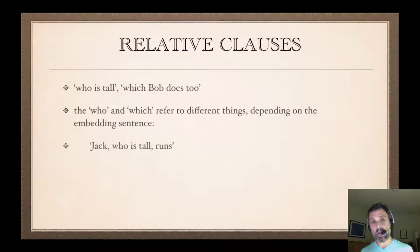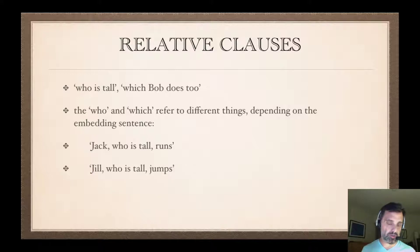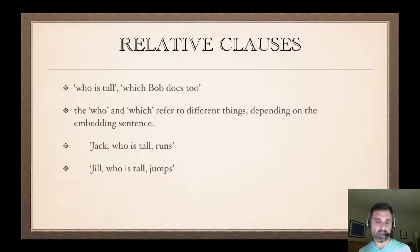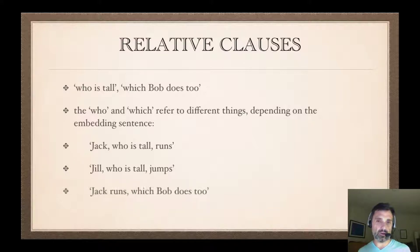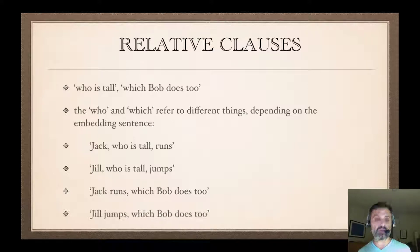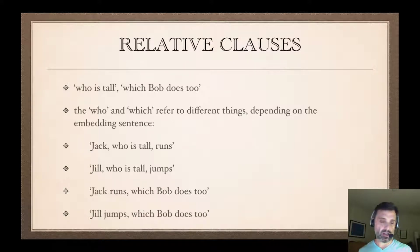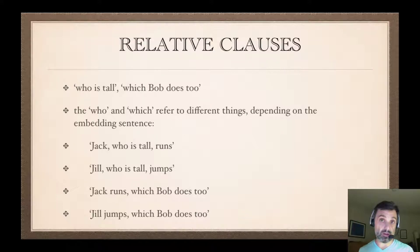For example: 'Jack, who is tall, runs' and 'Jill, who is tall, jumps.' In the first case, the 'who' refers to Jack. In the second case, the 'who' refers to Jill — so it's relative. And when we say 'Jack runs, which Bob does too' or 'Jill jumps, which Bob does too,' the 'who' or 'which' gets its reference from what it's related to, what it's relative to.